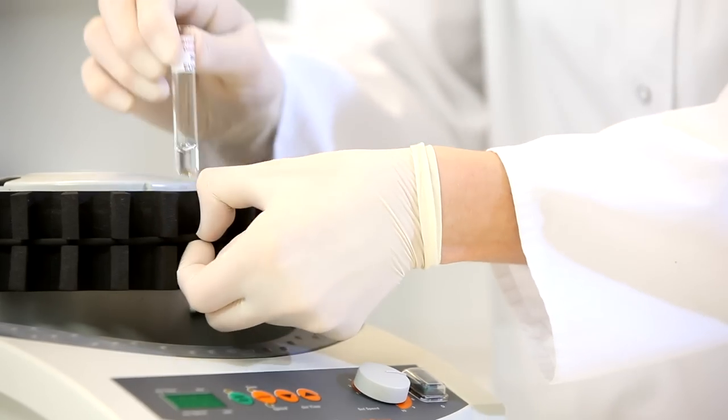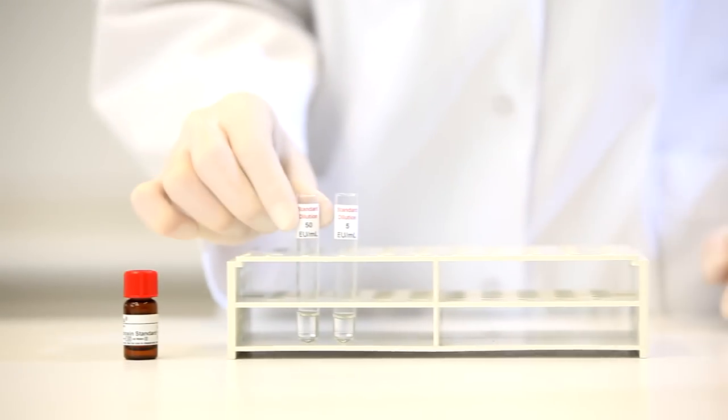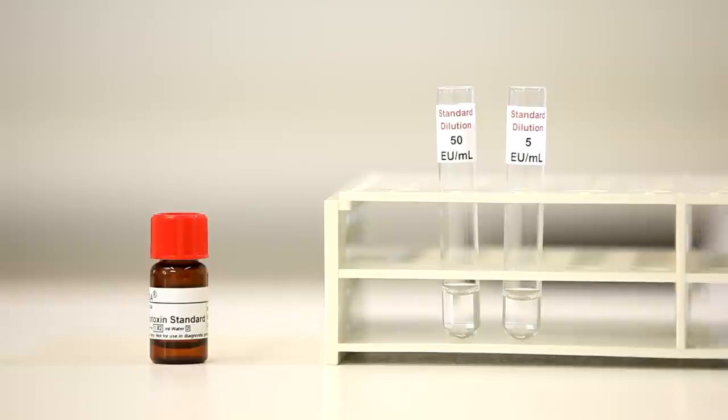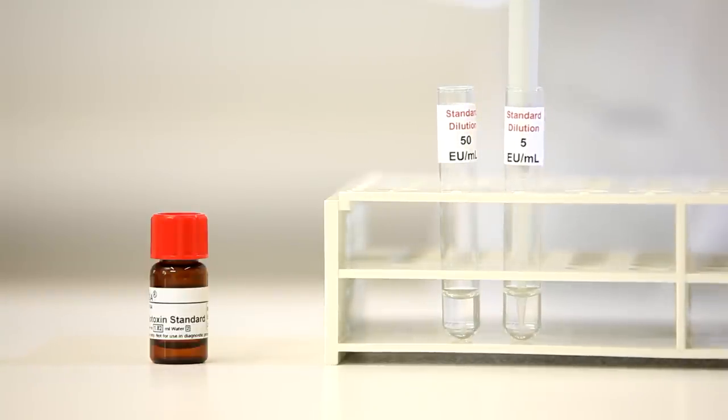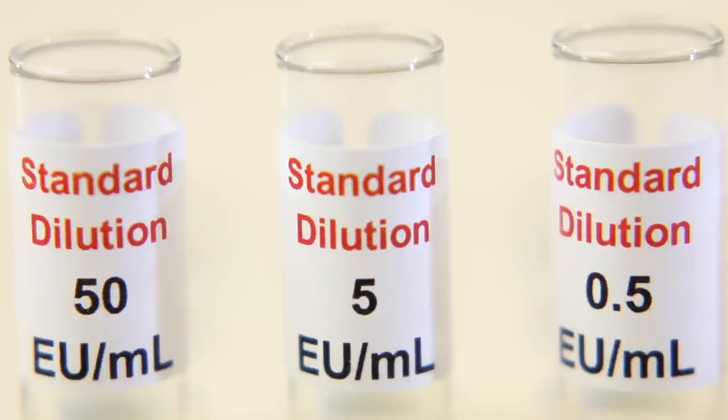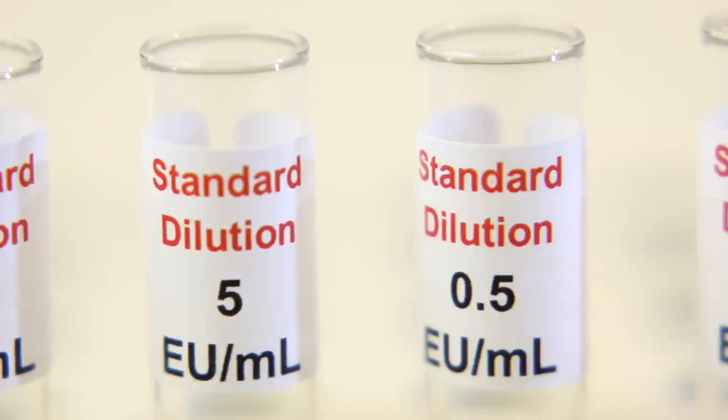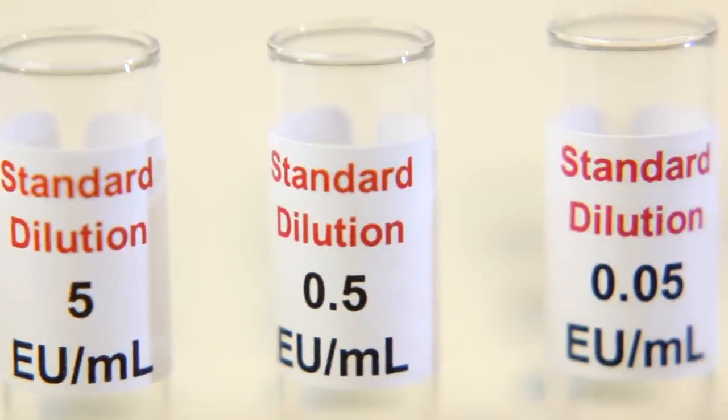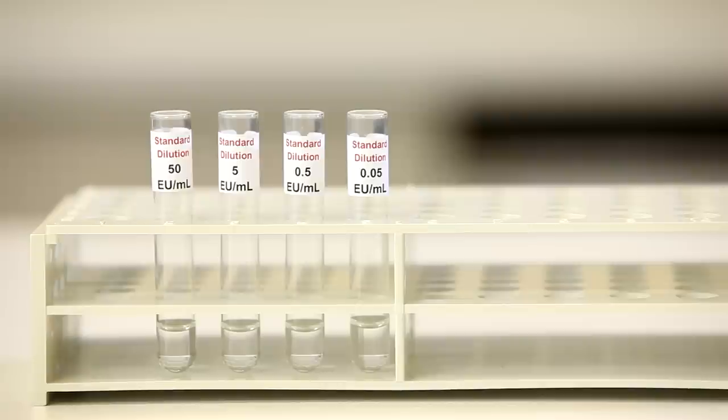Repeat 1 to 10 dilution steps to prepare further concentrations as required. The standard curve consists of 500 EU per milliliter, 50 EU per milliliter, 5 EU per milliliter, 0.5 EU per milliliter, and 0.05 EU per milliliter.